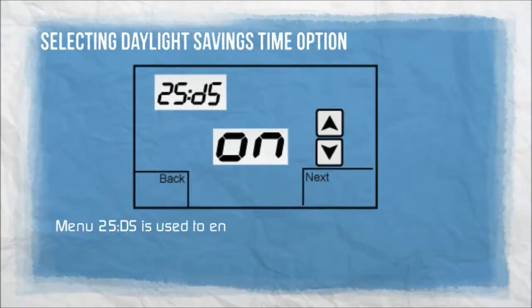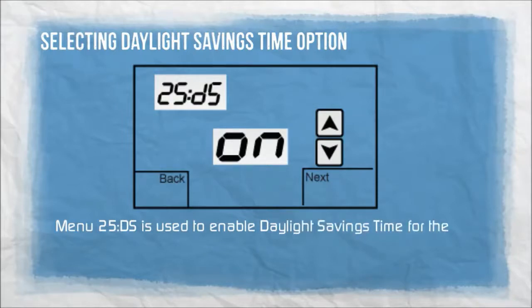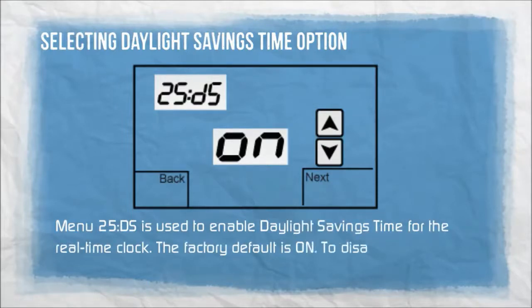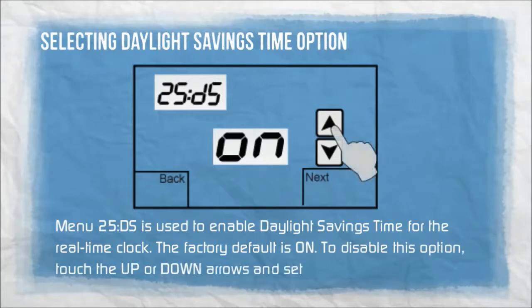Menu 25DS is used to enable daylight savings time for the real-time clock. The factory default is ON. To disable this option, touch the up or down arrows and set to OFF.